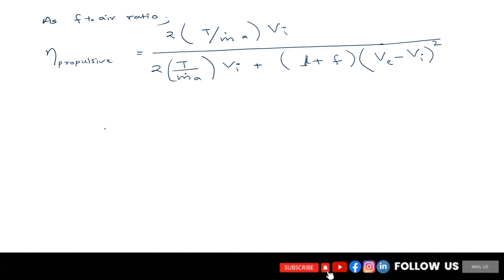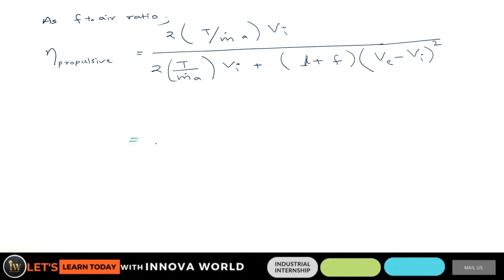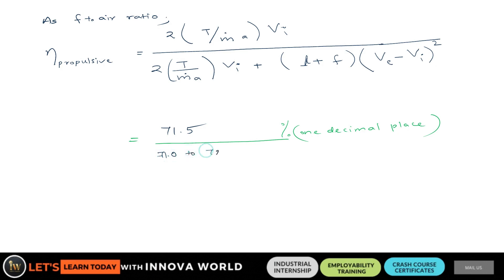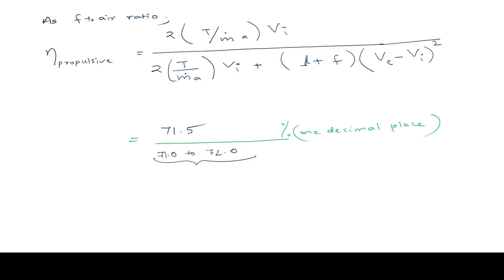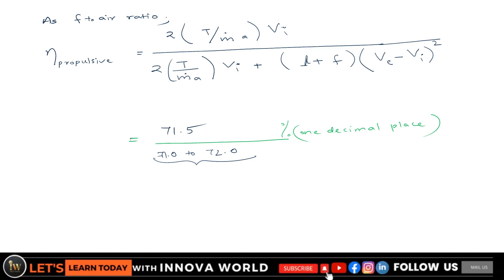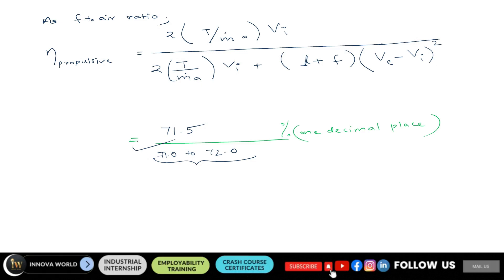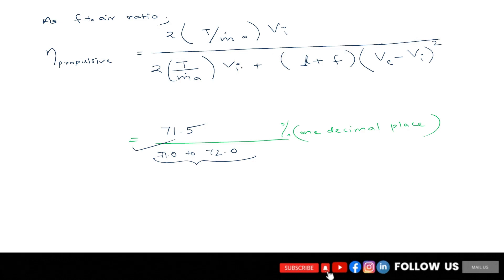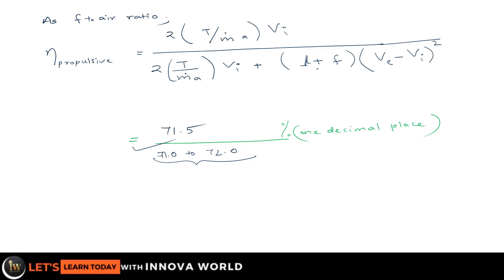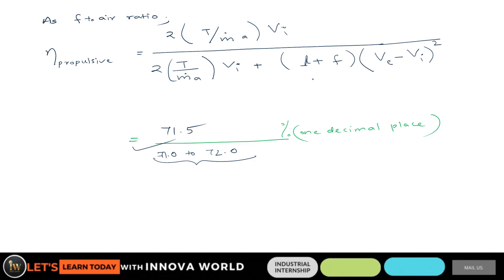Now solve this, substitute all the values and give me the answer. The answer ranges between 71.0 to 72.0%, and if it lies within this then you have done it successfully. You can check that if you are using without this (1 + f), are you getting the same answer or not? Obviously you will not get the same.